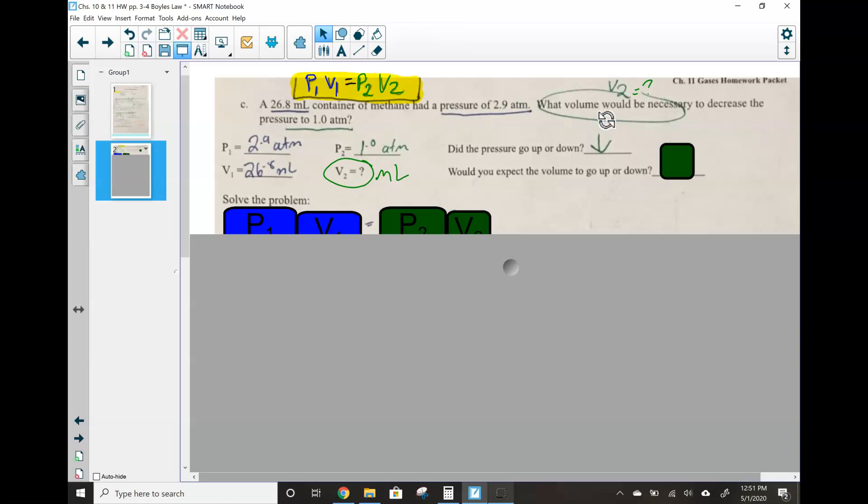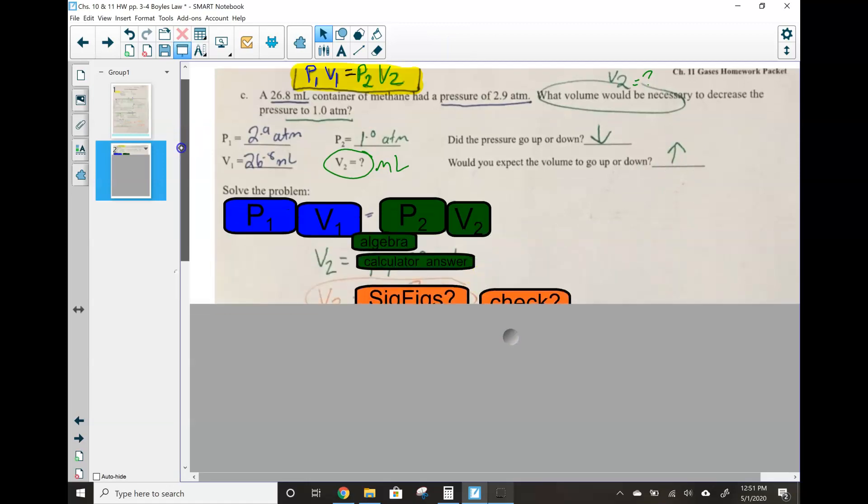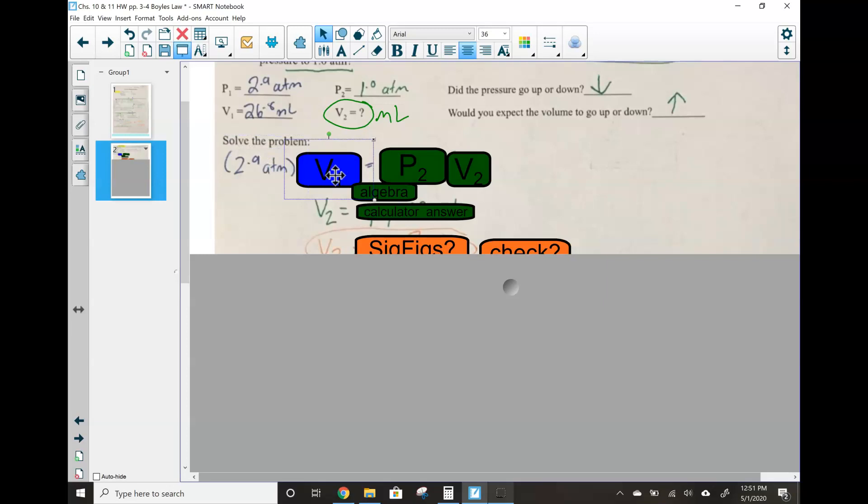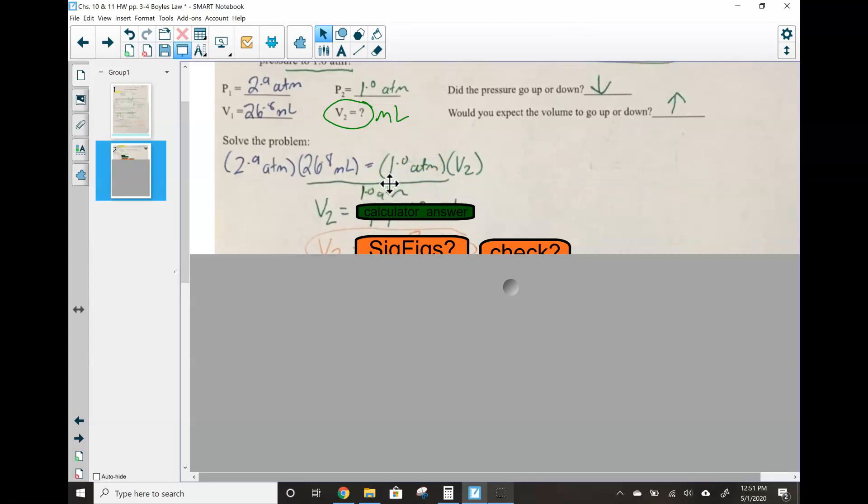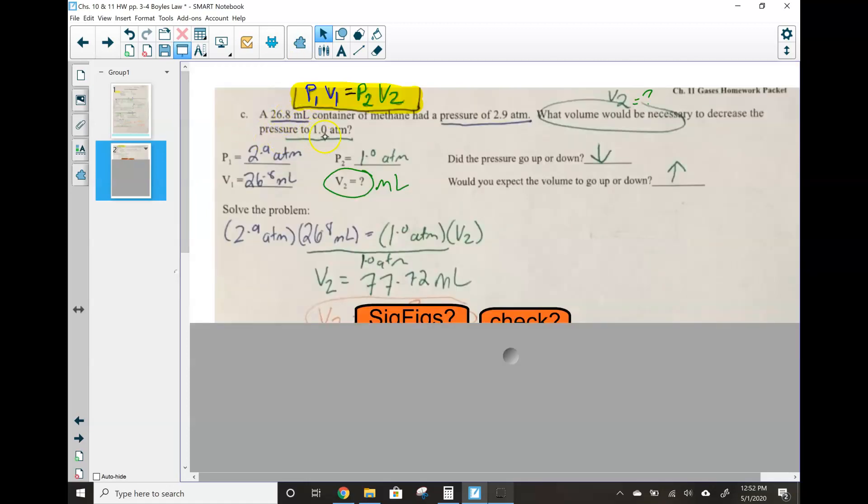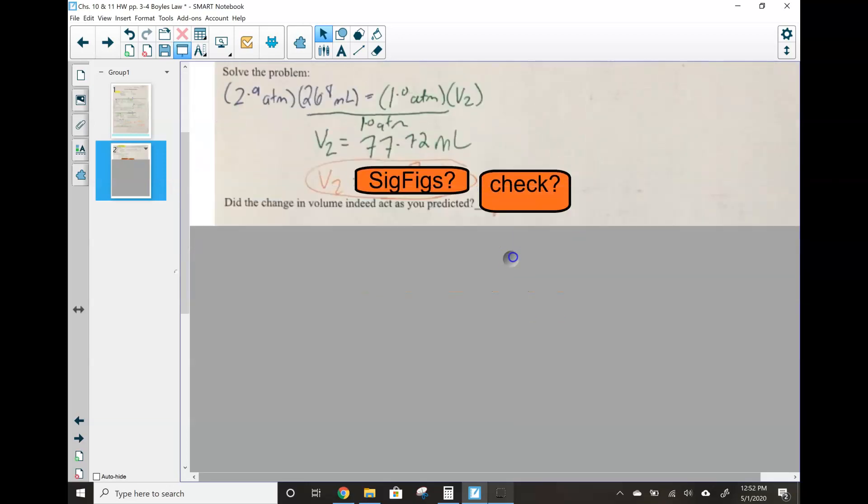So first things first, did the pressure go up or down? The pressure went down. Remember, they're indirectly related. So if pressure is down, we expect volume to go up. So let's look at our work. Pressure 1, plug in your variable, 2.9. Volume 1, plug in your variable, 26.8. Pressure 2, plug it in, 1.0. Volume 2, plug it in. What do I need to do to get volume 2 by itself? I need to do some algebra. We need to divide out that 1.0. So divide out that 1.0. And your calculator answer will give you 77.72 mils. Which is fine. They didn't say it couldn't be mils. How many sig figs do we need, though? 1, 2, 3. 1, 2. 1, 2. Least number of sig figs is 2.